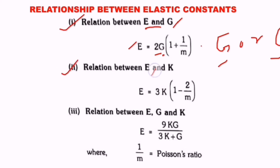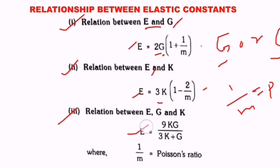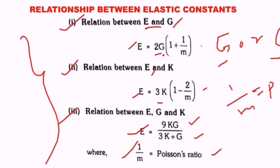Next, relation between E and K: E equals to 3K(1 − 2/M). Here 1/M is nothing but Poisson's ratio. Next, relation between E, G, and K: E equals to 9KG / (3K + G), where G can also be replaced with C. These are the three important relationships, very important from the exam point of view.